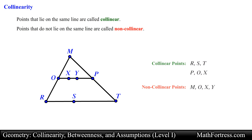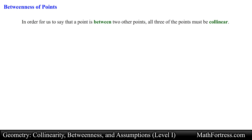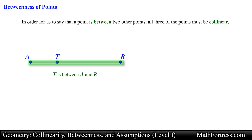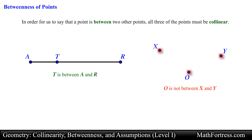Let's move along and talk about betweenness of points. In order for us to say that a point is between two other points, all three of the points must be collinear. For example, in the following diagram, point T is between point A and point R since all three points are collinear. On the other hand, we cannot say that point O is between point X and point Y since all three points are not in the same line.